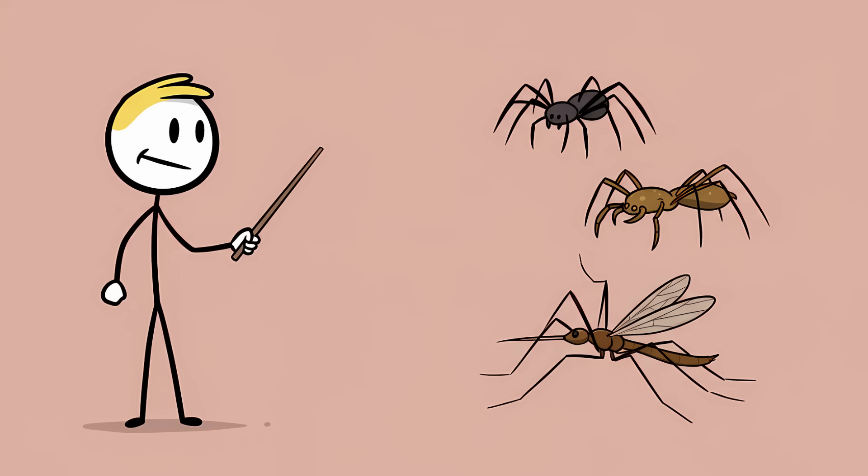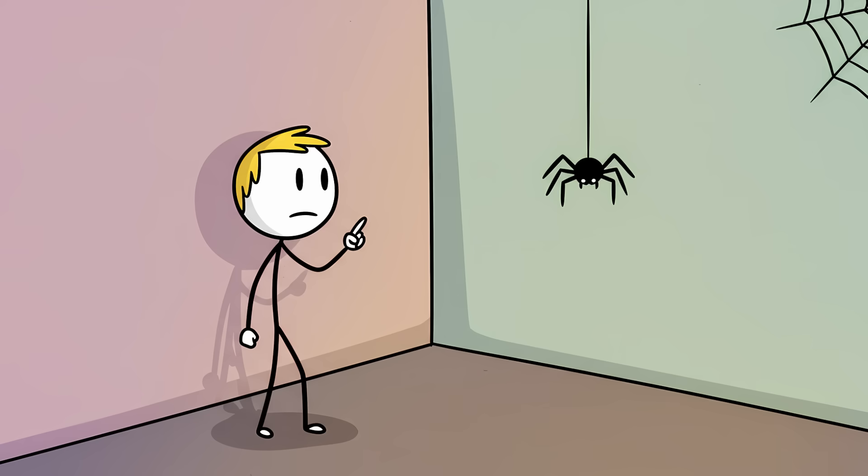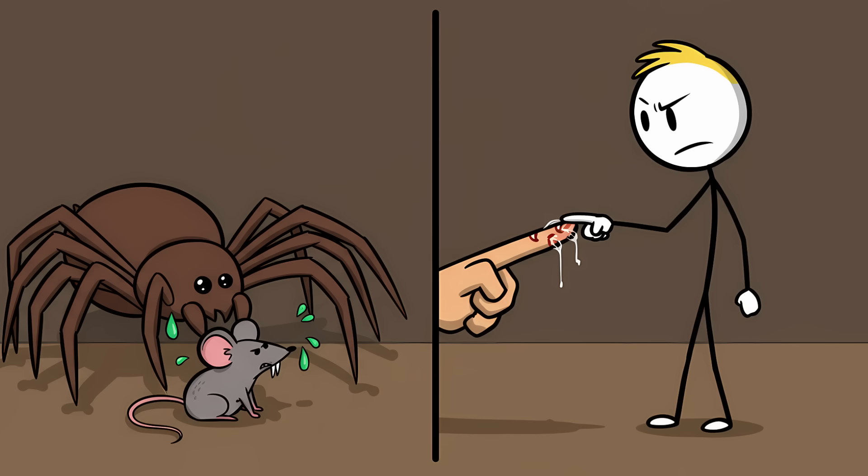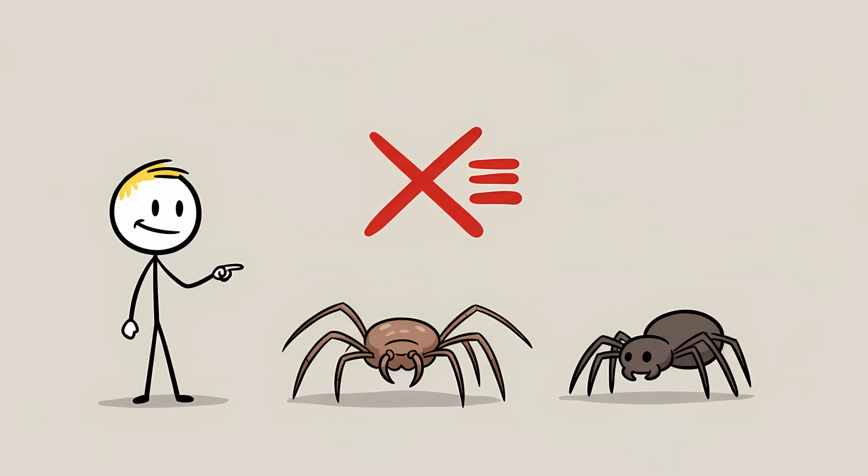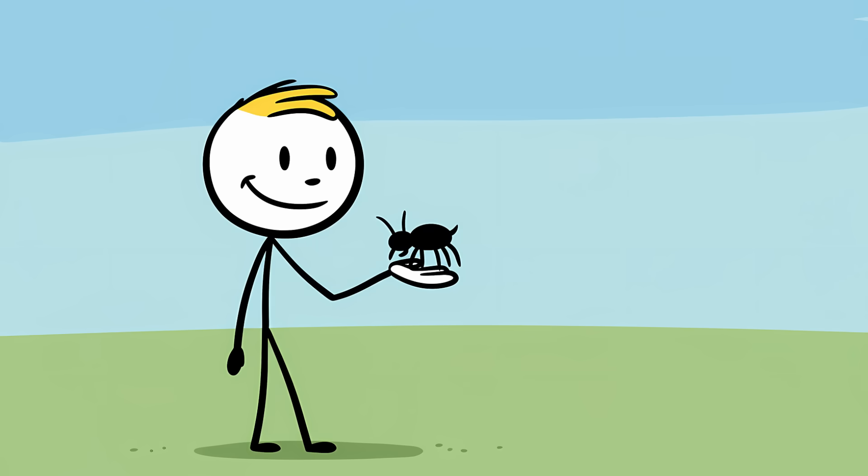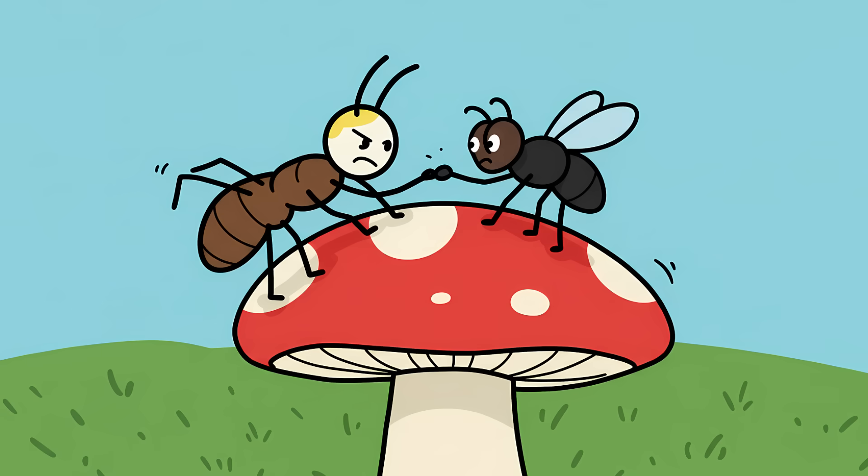One is the cellar spider, which is a true spider. It does have venom and fangs, but a study showed its venom had a negligible effect on mice. And there's no evidence its fangs are incapable of biting humans. They're just not dangerous. The second is the Harvestman, which isn't even a spider. It's an arachnid, but it has one body segment instead of two. And more importantly, it has no venom glands or fangs at all. It's about as dangerous as a housefly.